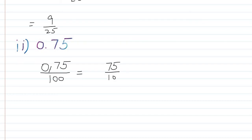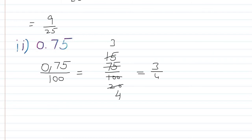Next, we convert 75 over 100 to its lowest form. Since both numbers end in 5 and 0, they are divisible by 5. Dividing by 5 gives 15 over 20, then dividing again by 5 gives 3 over 4. So 3 over 4 is the lowest form of 75 over 100, and that is the answer.